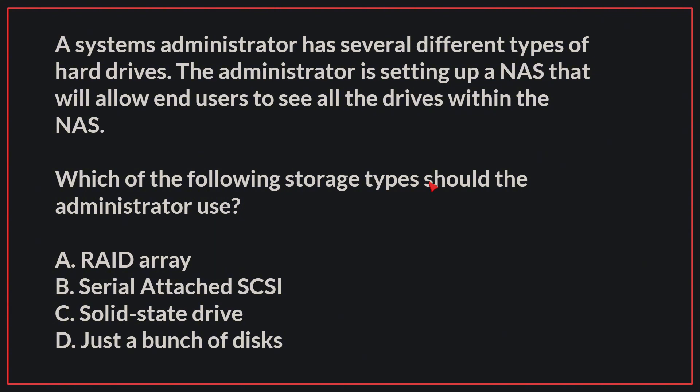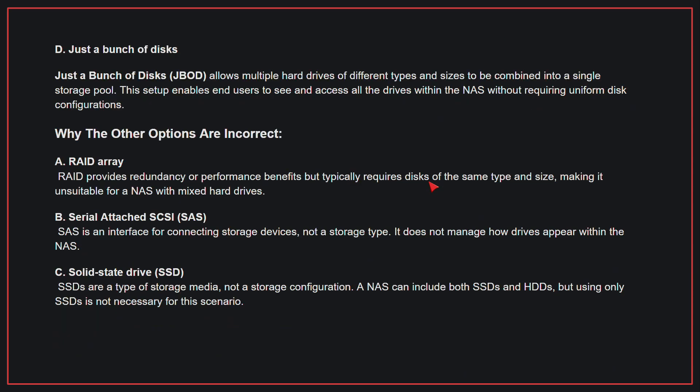A systems administrator has several different types of hard drives. The administrator is setting up a NAS that will allow end users to see all the drives within the NAS. Which of the following storage types should the administrator use? The correct answer is D, just a bunch of disks. JBOD allows multiple hard drives of different types and sizes to be combined into a single storage pool, enabling end users to see and access all the drives within the NAS without requiring uniform disk configurations.